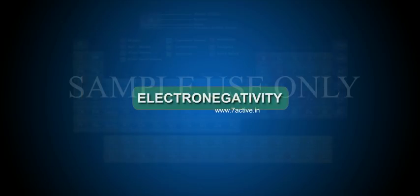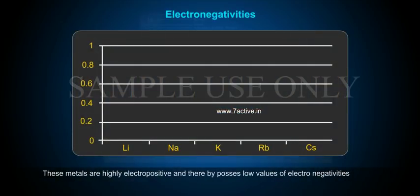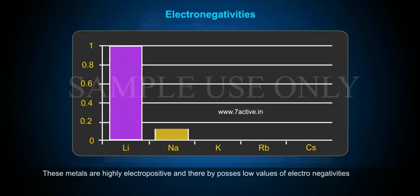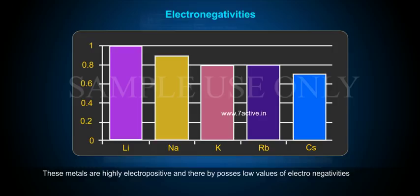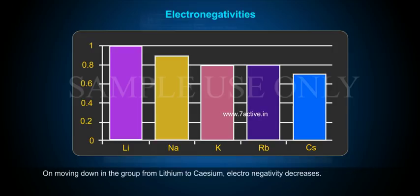Electronegativity. These metals are highly electropositive and thereby possess low values of electronegativities. On moving down in the group from lithium to cesium, electronegativity decreases.